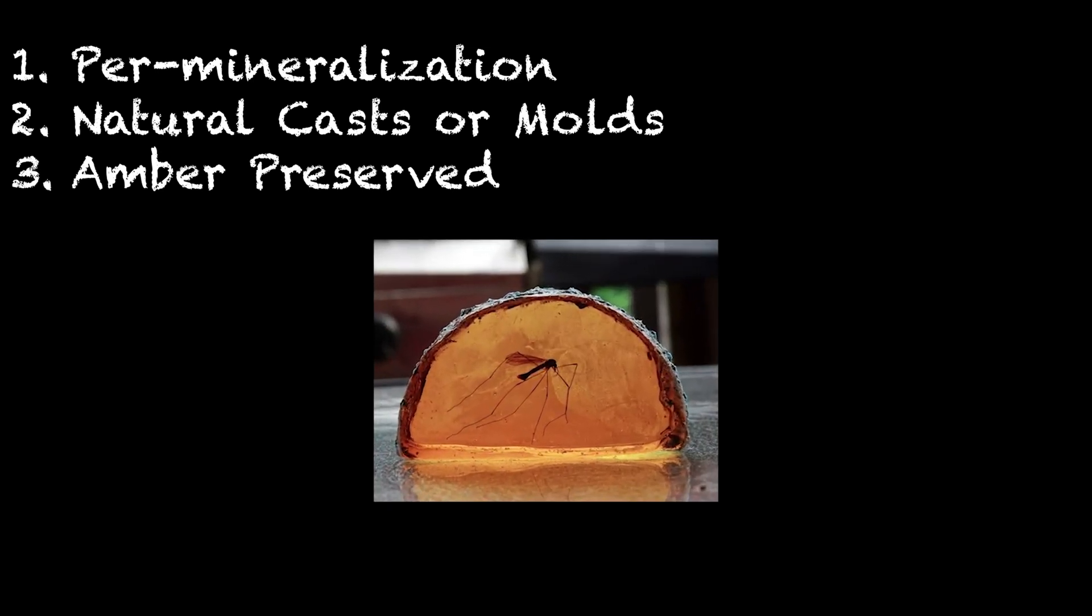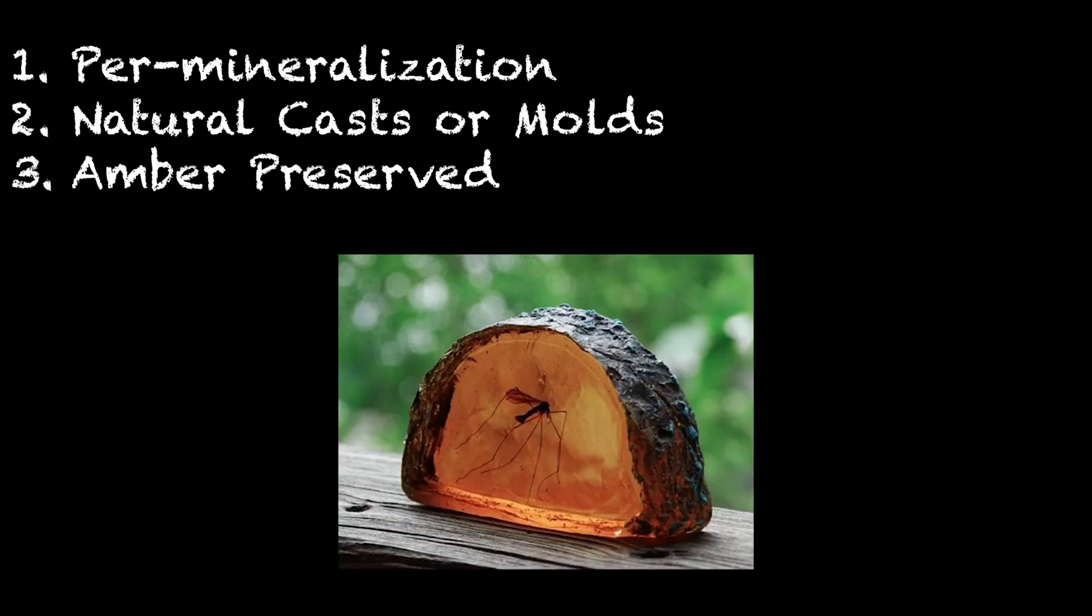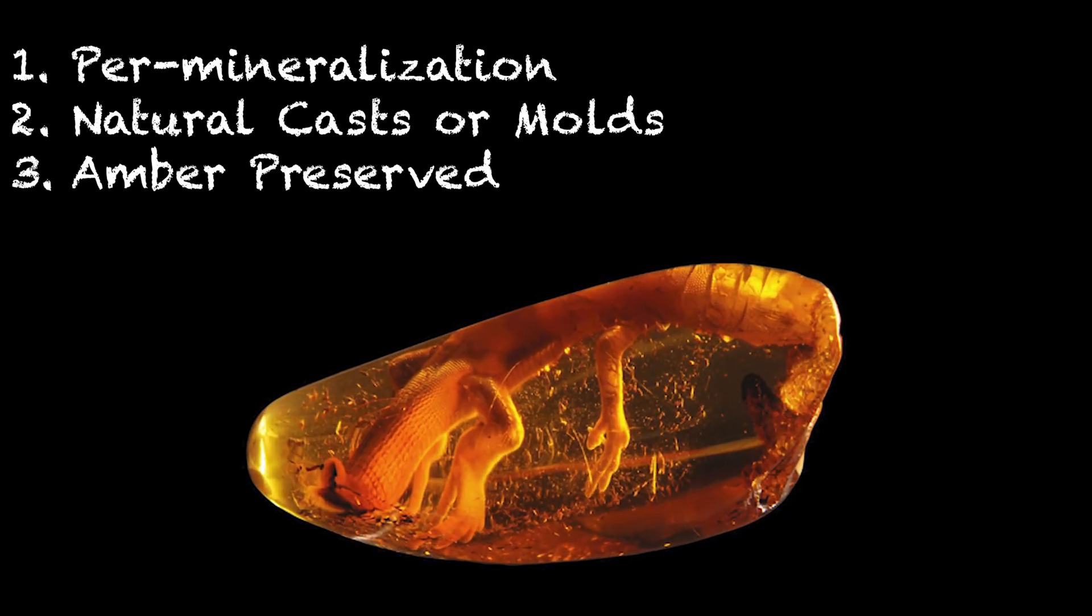Amber preserved are organisms that become trapped in tree resin that hardens into amber after the tree gets buried underground. Examples include insects, pollen, lizards, and frogs.